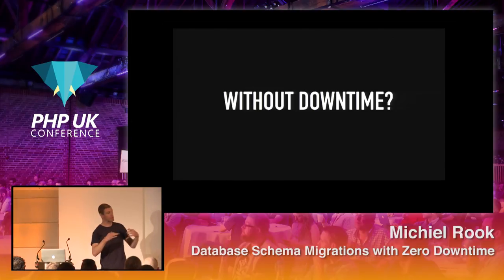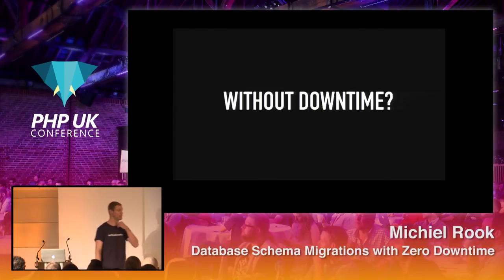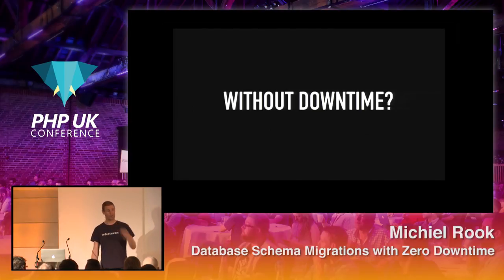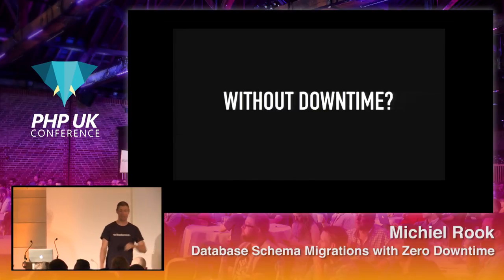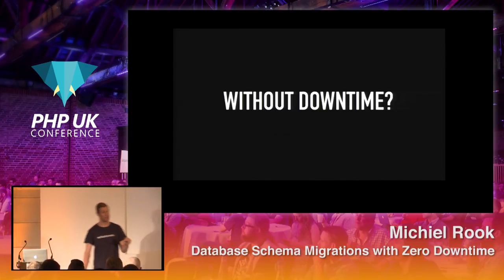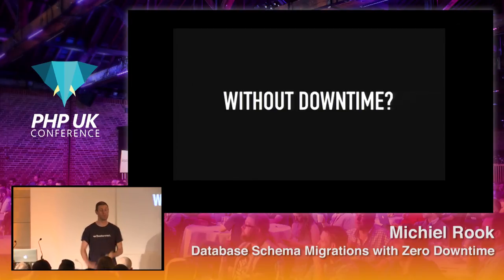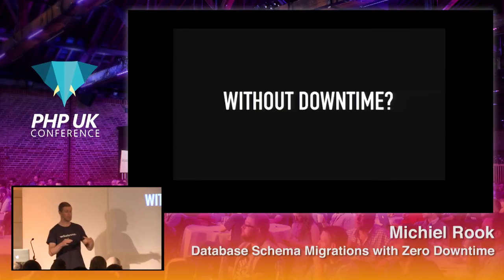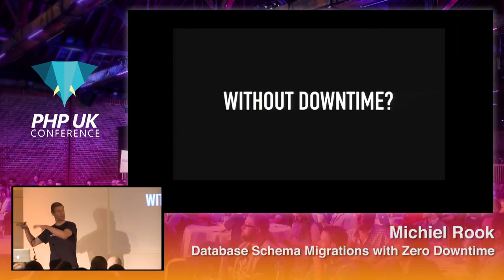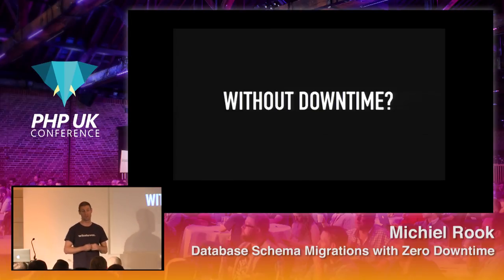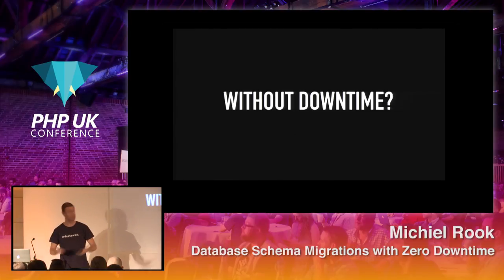I've given that talk a few times — not just here at PHP UK, but also at other conferences. One of the questions I keep getting asked is: going to production 50-plus times per day is very cool, but we have this database and we do schema migrations as we do code changes, and we need to take the app down while performing the database migration. So how can we get from where we are to that situation? That question triggered me to write this talk.